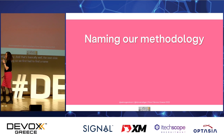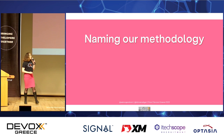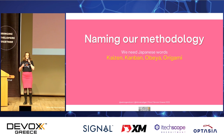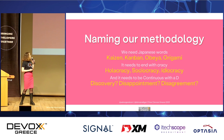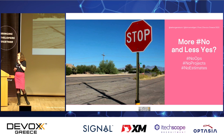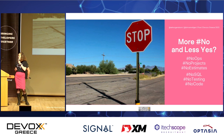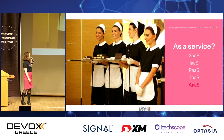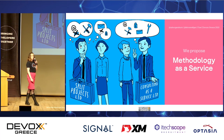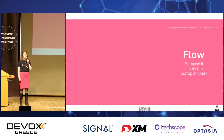We needed Japanese words like kaizen, kanban, obeya, origami. We also needed to end with '-cracy' like holacracy, sociocracy, idiocracy — so nobody can pronounce it. We needed to start with 'D' like continuous discovery, disappointment, or continuous disagreement. We also explored: no-ops, no projects, no estimates, no SQL — already taken — no testing, no code, serverless, pointless, and everything as a service: SaaS, PaaS, TaaS. In the end, we chose 'flow' because it fits really nicely on laptop stickers — that was the primary requirement.